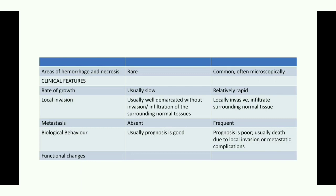Sometimes tumors can secrete ectopic hormones — hormones that are not indigenous to the tissue of origin but are normally produced elsewhere. For example, a bronchogenic carcinoma can produce ACTH and parathyroid-like hormones. ACTH is normally produced in the anterior pituitary, but in lung cancer it is an ectopic production. These are the functional changes that can happen in a tumor.